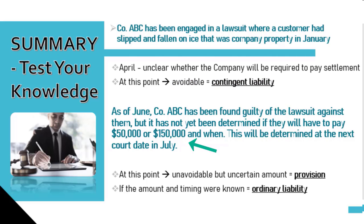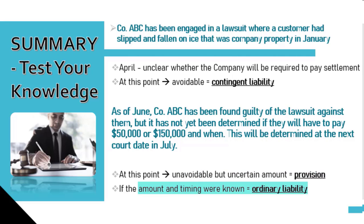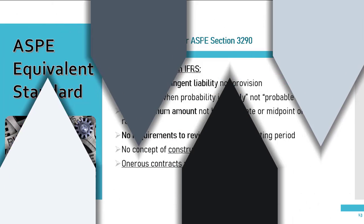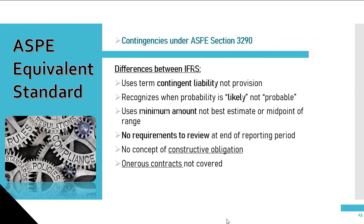However, as of June, company ABC has been found guilty of the lawsuit against them. But it has not yet been determined if they will have to pay $50,000 or $150,000 and when — this will be determined at the next court date in July. At this point, it represents a provision because it is unavoidable as the company will be required to pay some amount. If the amount and timing were both known at this point, then it would be classified as an ordinary liability.